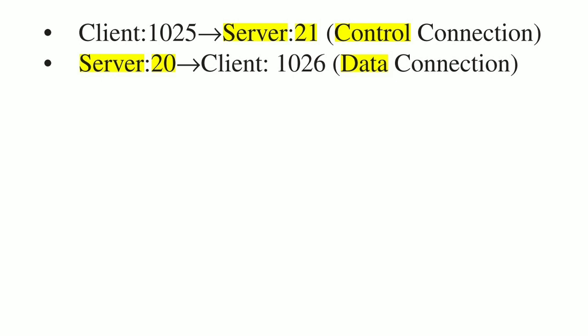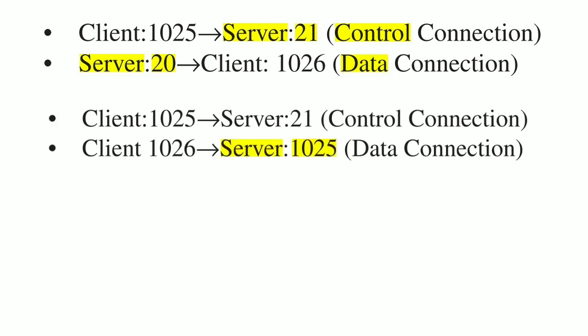The control connection follows the classical client-server model where the client requests connection to the server. However, the data connection does not follow this classical model, because the server initiates it. Therefore, sometimes a firewall at the client end does not allow this data connection. This is called active FTP, and in order to counter this firewall issue, we use the passive data connection, where every connection — whether control or data — is originated from the client. The server also uses a non-reserved port in passive mode.